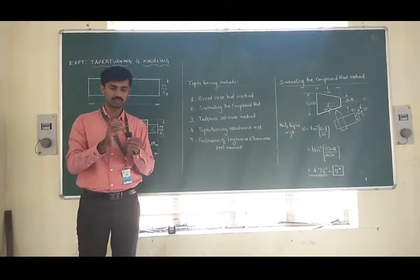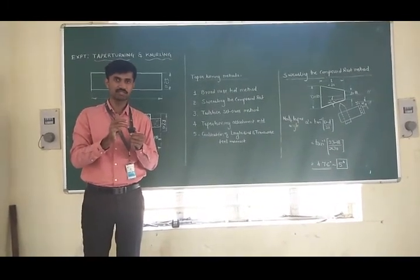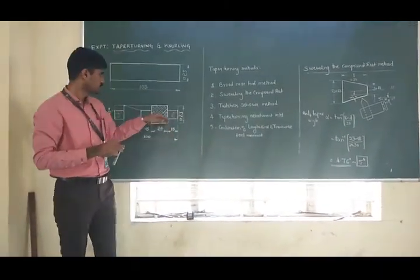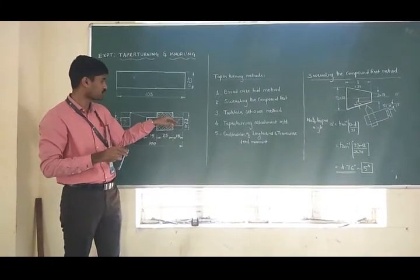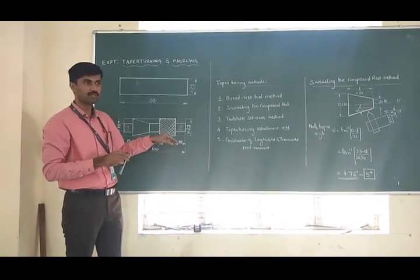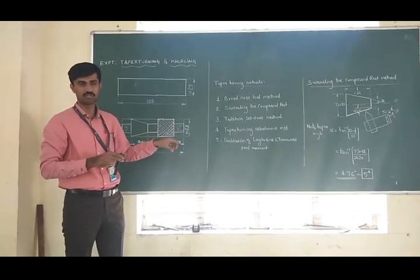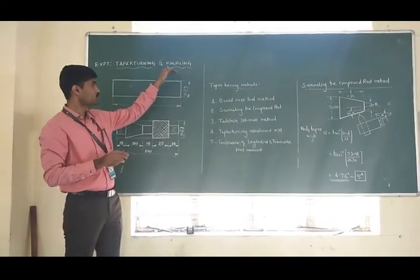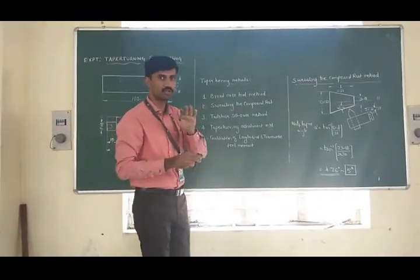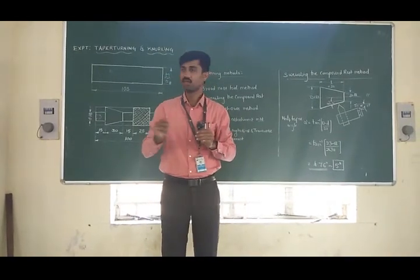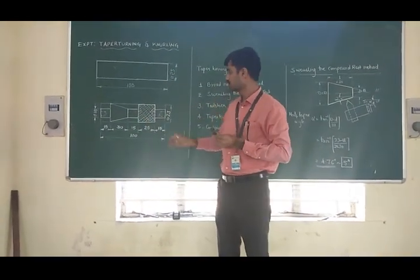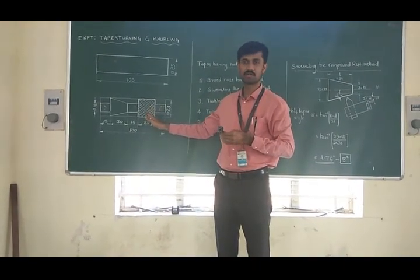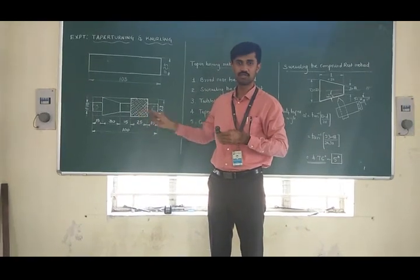Knurling is done in order to create a rough or corrugated surface on a cylindrical workpiece, which is helpful in holding the workpiece — it is done for gripping the cylindrical workpiece. One more important factor about knurling is that knurling is not a machining operation. Knurling is a forming operation where whatever pattern the knurls have will be embossed on the workpiece by applying extreme pressure on the cylindrical workpiece.